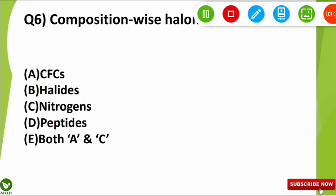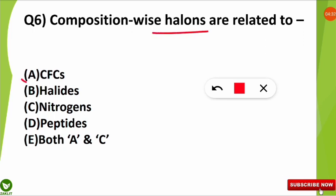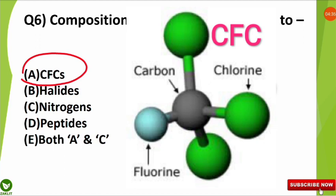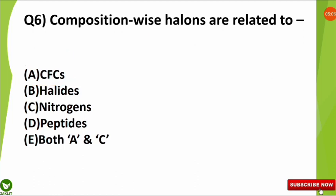The sixth question was: composition-wise, the halons are related to which of the following? Halons are compounds that can be haloalkanes, halomethanes, or other halogen compounds — the key is they must contain a halogen such as fluorine, chlorine, or bromine. Composition-wise, halons are related to CFCs (chlorofluorocarbons), containing chlorine, fluorine, and carbon. For example, halon 1122 and halon 242 (C2Cl2F4) both contain chlorine, fluorine, and carbon.